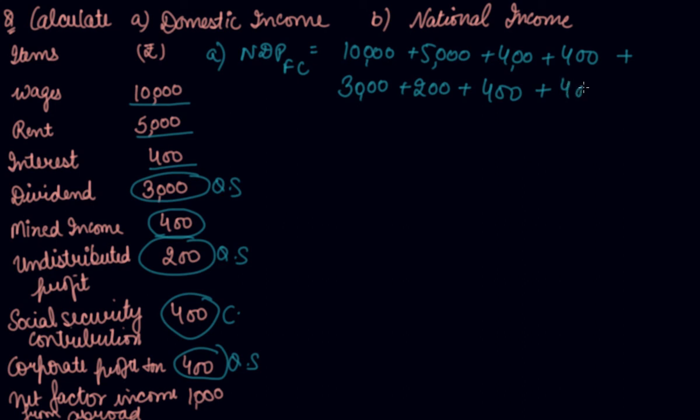Adding all these items — mixed income of 400 — we get Rs. 19,800. This is our NDP at FC.